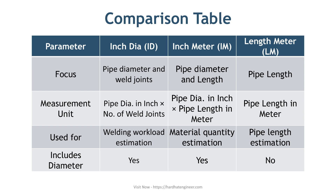To summarize: inch diameter is about welding workload based on diameter and number of joints; inch meter is for material quantity considering diameter and length; and length meter is simply the total pipe length.